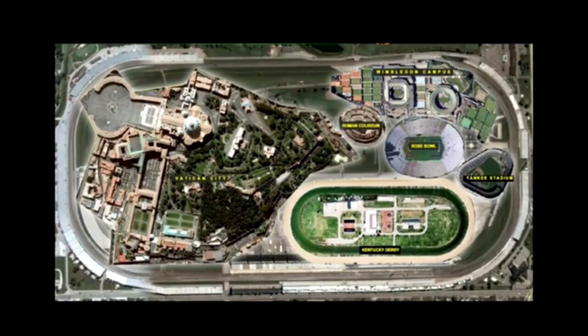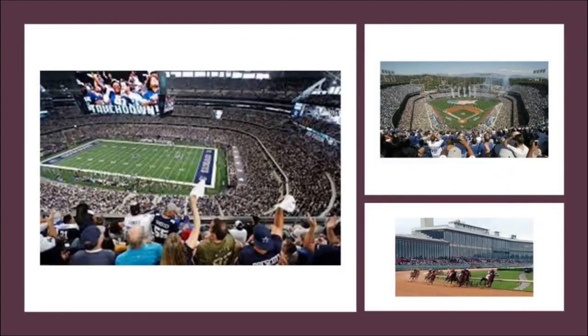The Indianapolis Motor Speedway is the largest sports venue in the world, said to have been constructed in 1909. Vatican City, the Wimbledon Campus, the Roman Coliseum, the Rose Bowl, Yankee Stadium, and the Kentucky Derby all fit inside the automobile racing circuit. Wouldn't it stand to reason that those behind the reset, when setting up the new world, would take advantage of the super science of the different types of circuits in the Earth's grid system in order to harness their inherent power to enhance performance at sporting events and make lots of money at highly charged, prestigious gaming and betting venues?